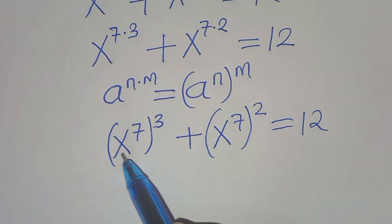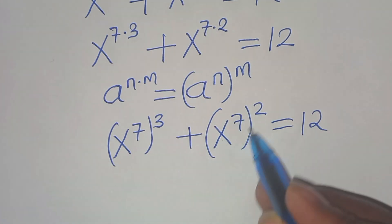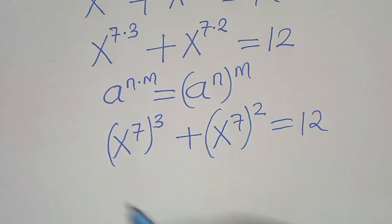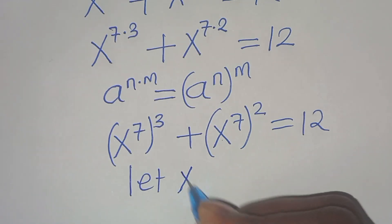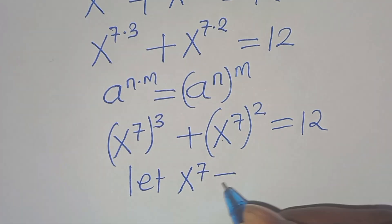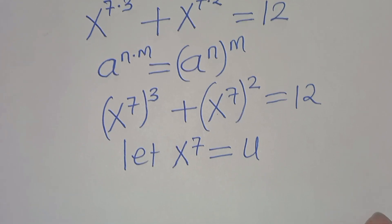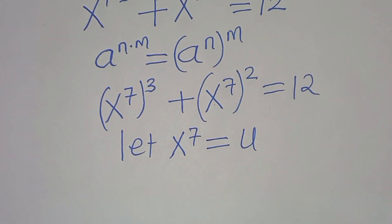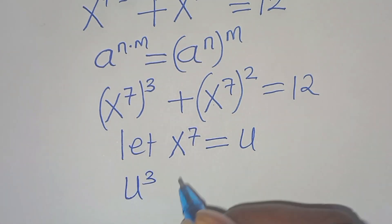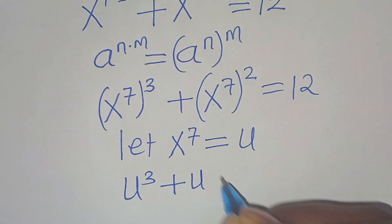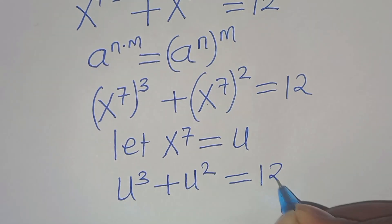Next, we let u equal x to the power of 7. Substituting, we now have u to the power of 3 plus u to the power of 2 equals 12.